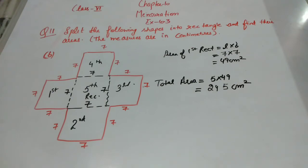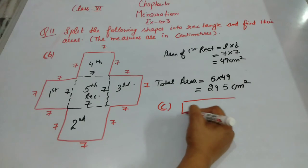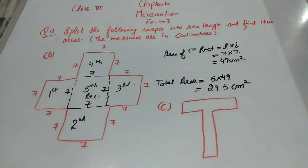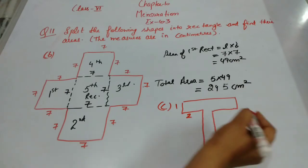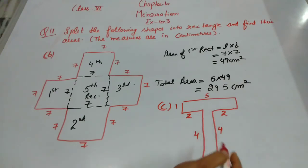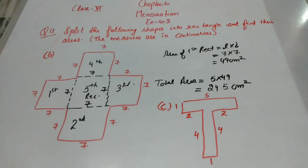Part C is your homework. I have drawn the figure of Part C here. Divide it into rectangles, find the length and breadth of each, calculate the areas, and write the answer in the comment box. I will check who has done it correctly. We will move on to question 12 in the next video.